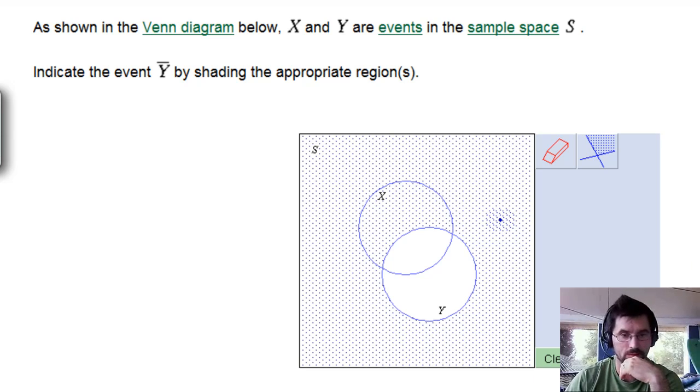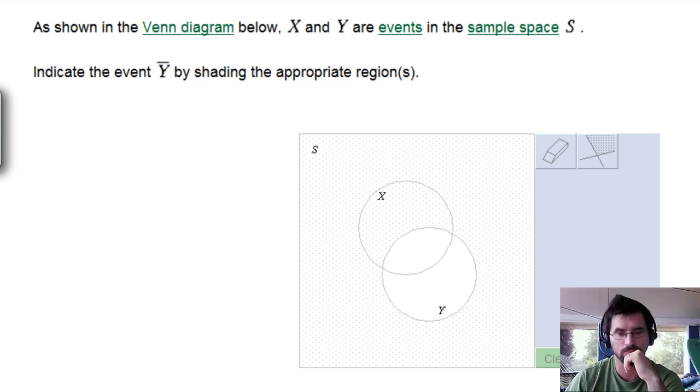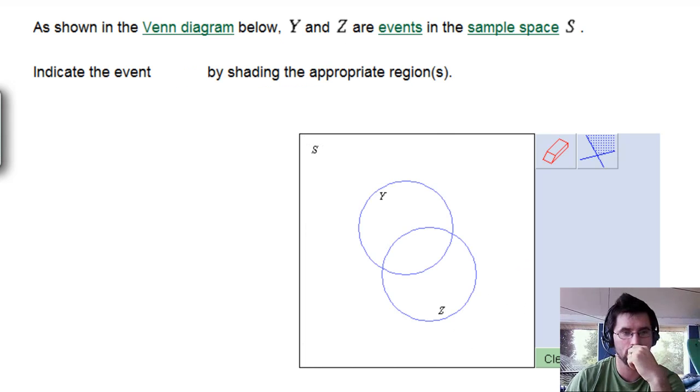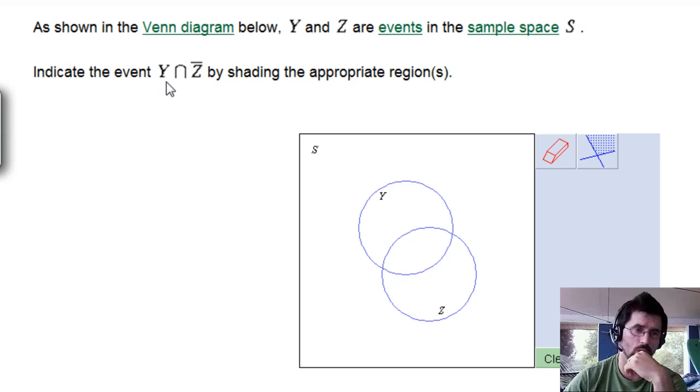All right, let me hit next. We'll do a bunch of these. All right, this one says indicate the event Y intersect Z complement.